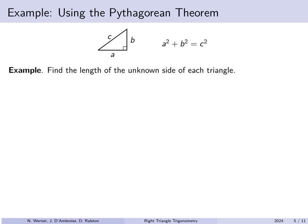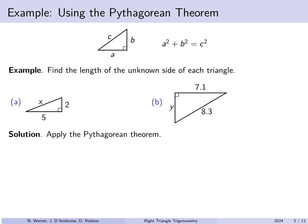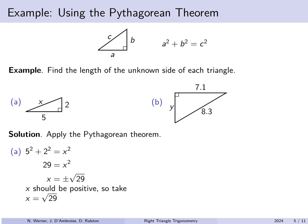Let's find the length of the unknown side in each of the following triangles. First, we have a hypotenuse of X with other sides 2 and 5. We apply the Pythagorean Theorem: 5 squared plus 2 squared equals X squared. Since 25 plus 4 equals 29, X is plus or minus the square root of 29. But because side lengths must be positive, X equals the positive square root of 29.